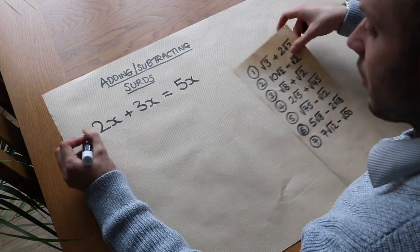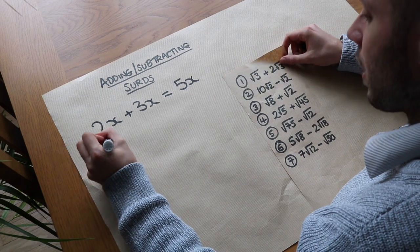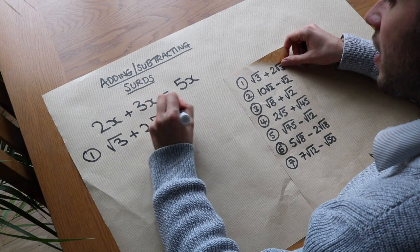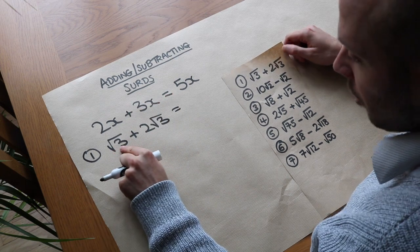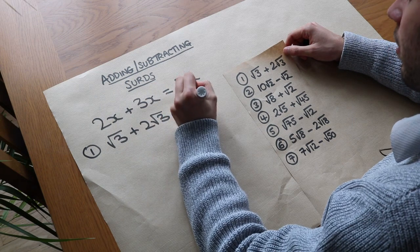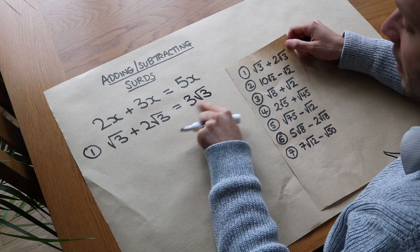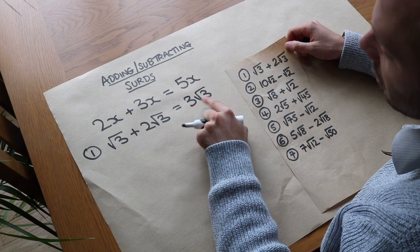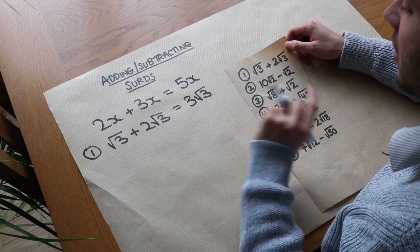So similarly, if I wrote this first question here, the square root of 3 plus 2 root 3, we could say that as, well we've got 1 lot of root 3 plus 2 lots of root 3, we would have 3 lots of root 3. And we could write that as this in a similar way. 5x just means 5 times x, 3 root 3 just means 3 lots of root 3, 3 times root 3.